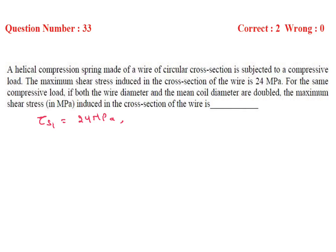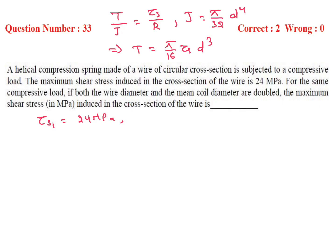Initial case: tau S1 is 24 MPa. From the torsion equation, T by J equals tau S by R. For circular cross section, J equals pi by 32 times D to the power 4. Solving, torque T equals pi by 16 times tau S times D cubed.